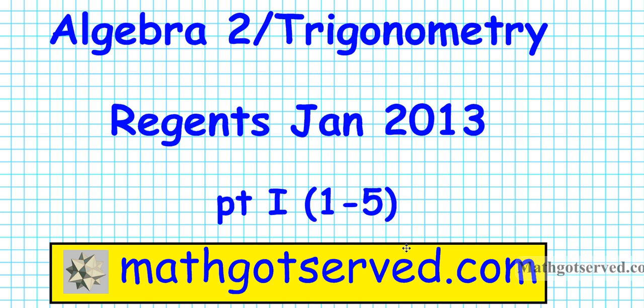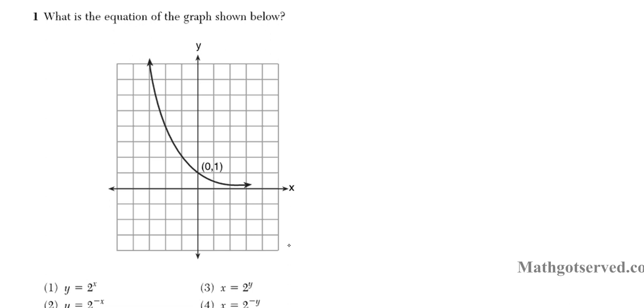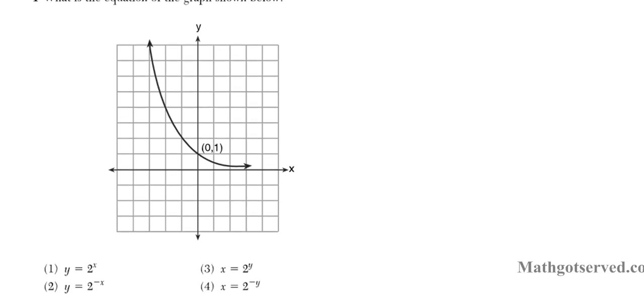Good day students, in this clip we are going to be going over questions 1 to 5 in the Algebra 2 Trigonometry Regents exam for January 2013. This is part 1 of the multi-part installment series. Let's go ahead and take a look at question 1. Question 1 says what is the equation of the graph below? This is the graph of an exponential function.